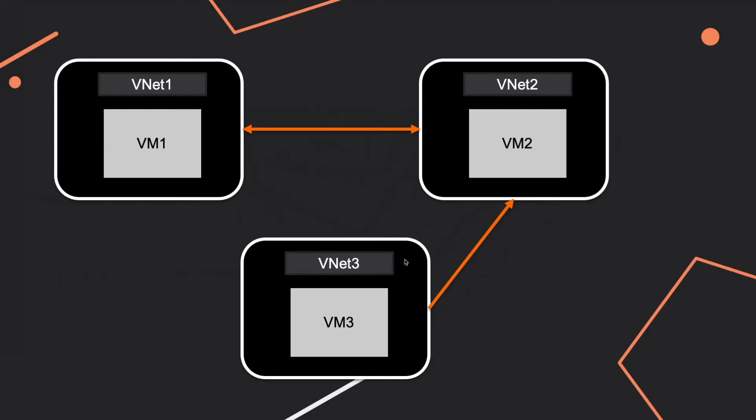Vnet three is paired with vnet two. At the exam you won't get a schema like this one - you'll most probably get a use case presented in a more complex way, because they want you to simplify things and go straight to the point. You can get information about address ranges, locations, subnets, key vaults, or other things.